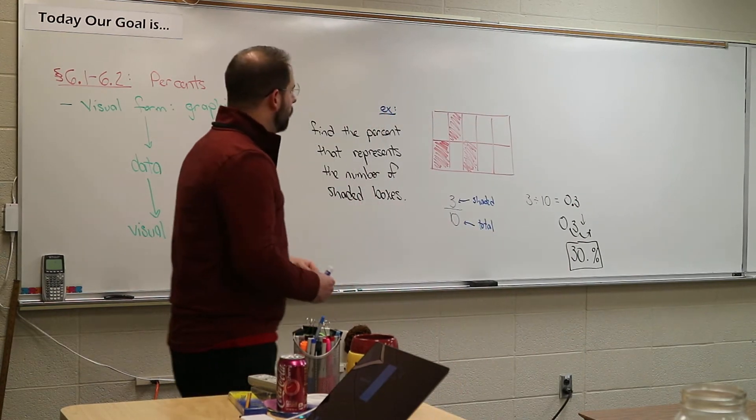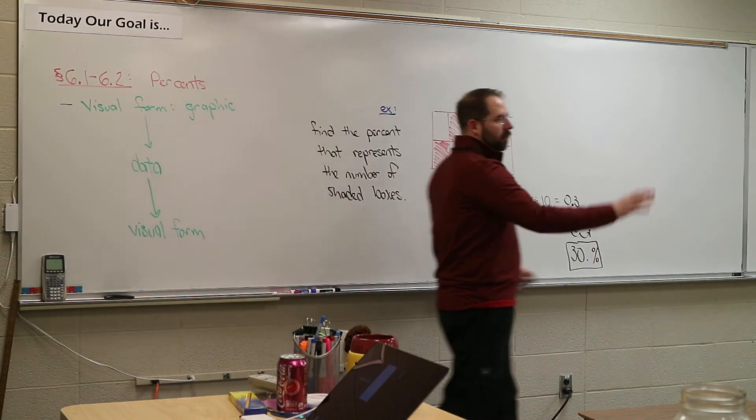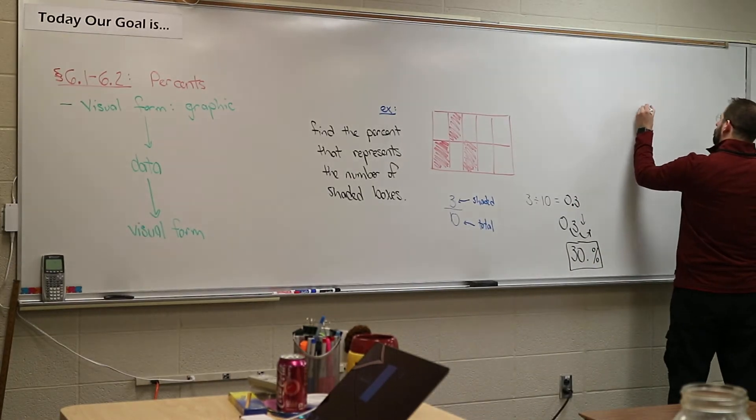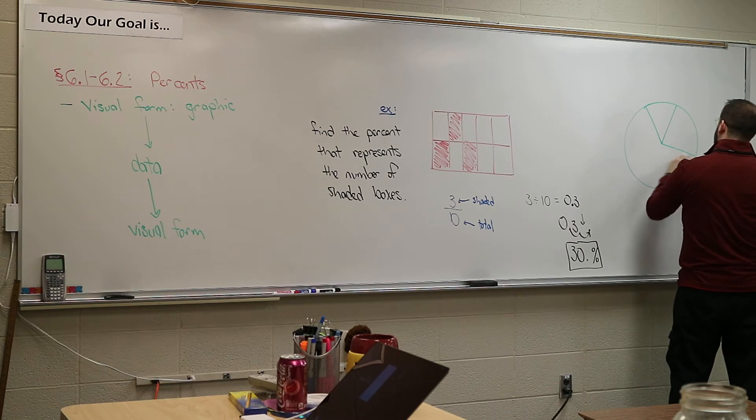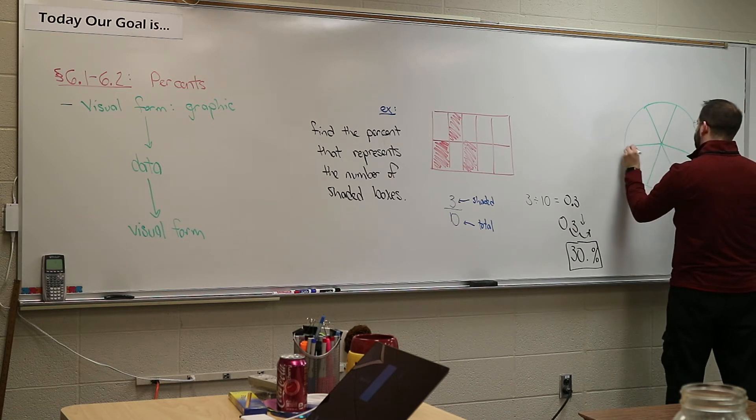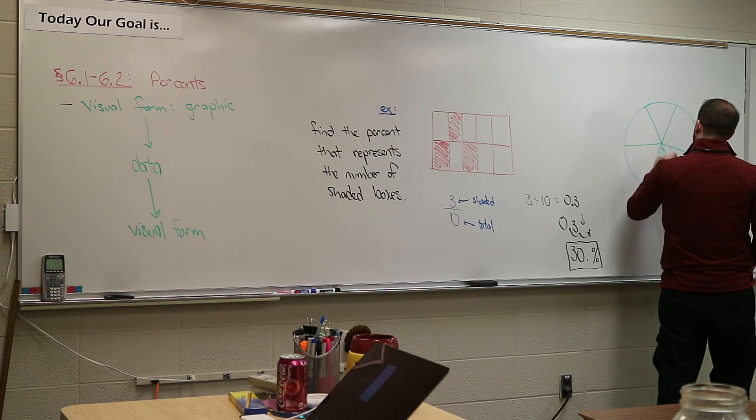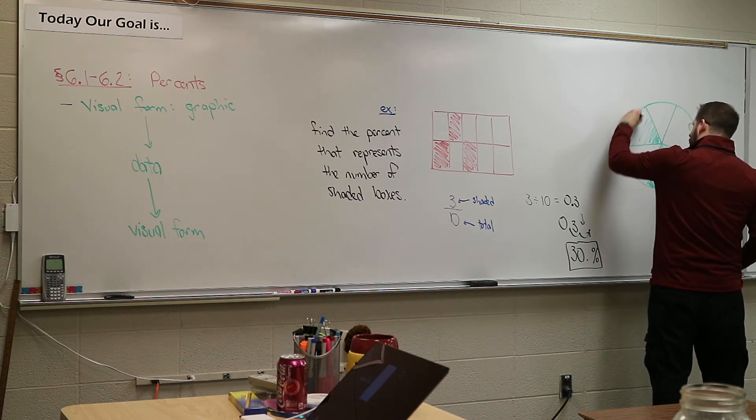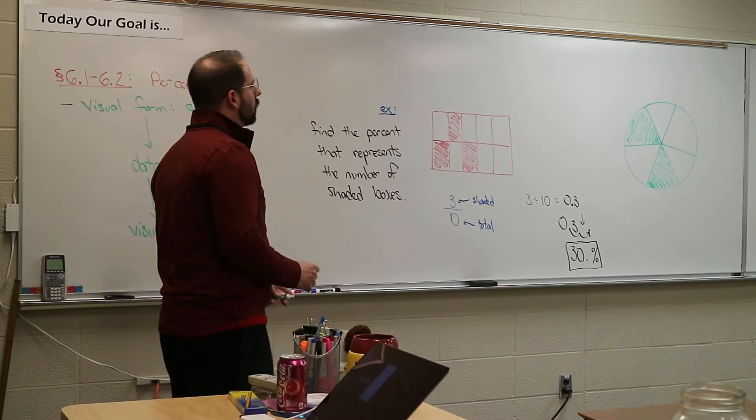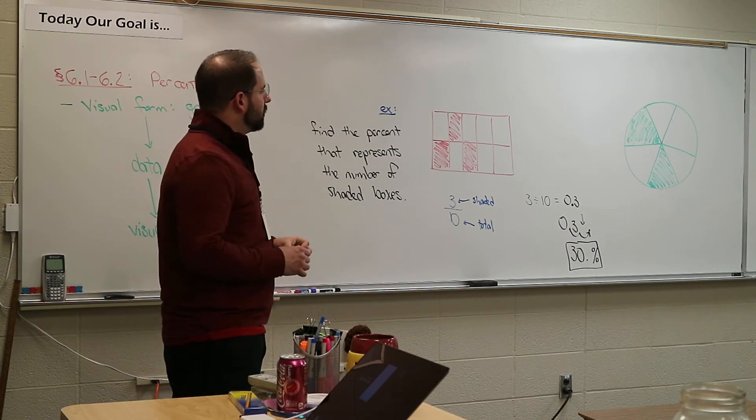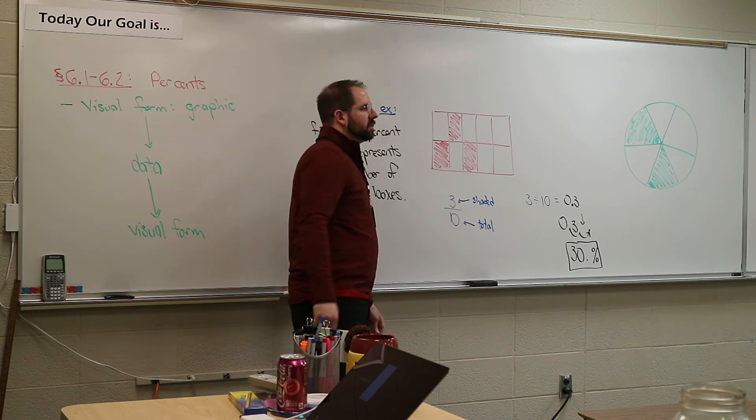Let's do another one. I'll do it kind of easy like this, but I'm going to do a different graphic. Let's go with a pie chart. Now imagine that these are all the same size. They're all the same size, they have to be the same size for this all to work. So it's supposed to be perfectly balanced. Let's see if you can do it in your notes. Let's see if you can figure out the shaded part.